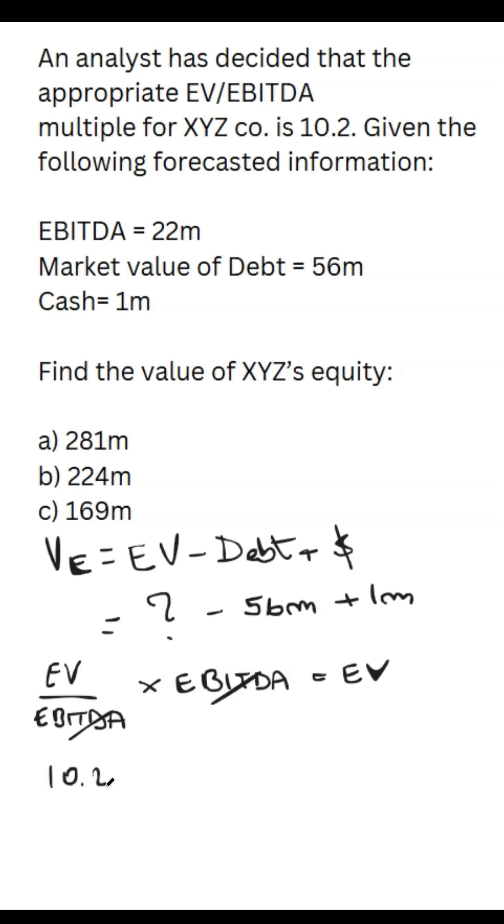So we take 10.2, which is the multiple, multiply it by 22 million. This gives us 224.4, which was the only missing piece.